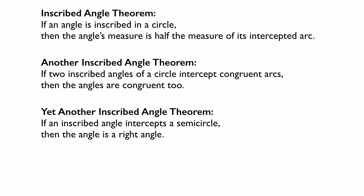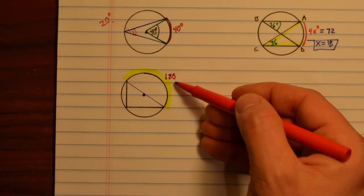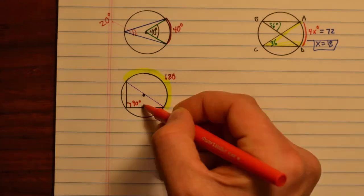Another inscribed angle theorem states that if an inscribed angle intercepts a semicircle, then the angle is a right angle. Looking at that bottom corner angle, it is an inscribed angle that intercepts a full semicircle. A semicircle is 180 degrees, so the angle must be half as big — 90 degrees.